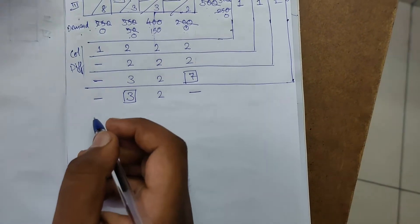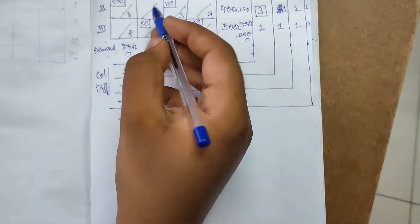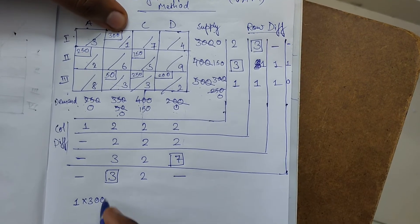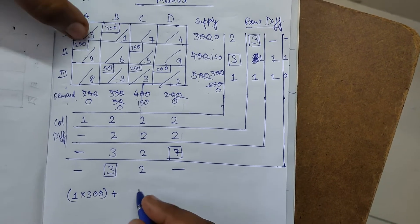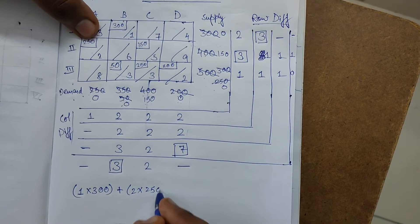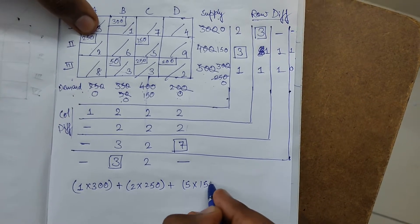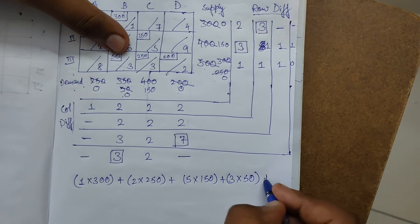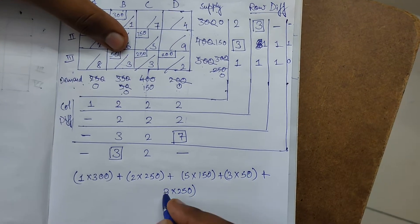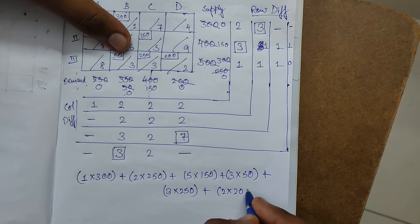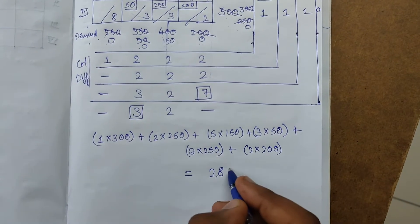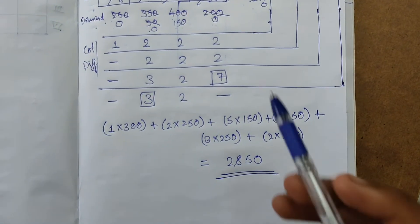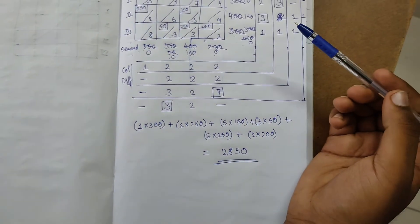Now write the solution by reading the small allocation boxes: 1×300 + 2×250 + 5×150 + 3×50 + 3×250 + 2×200. Calculating this gives a total cost of 2850. This is the solution using Vogel's Approximation Method.